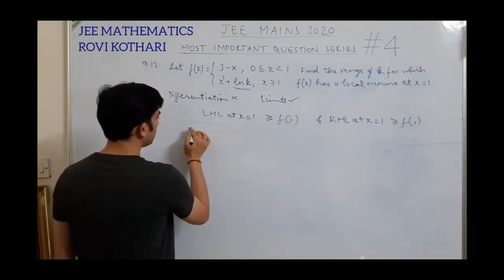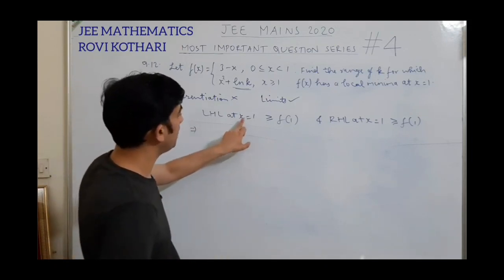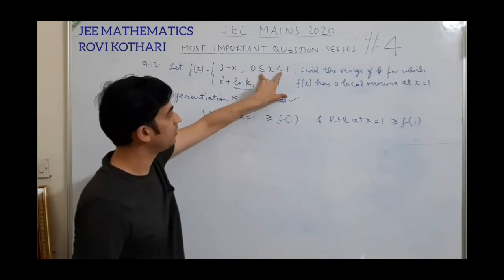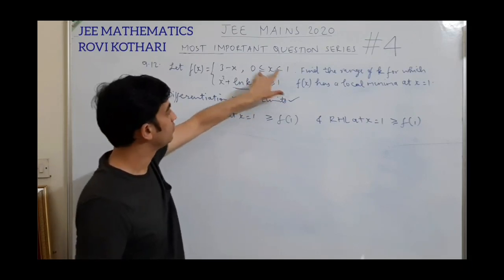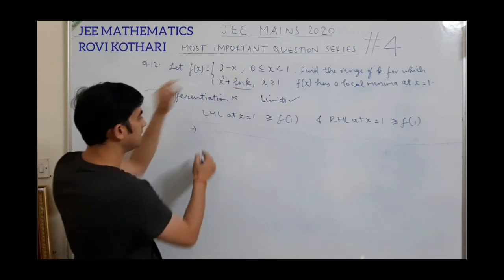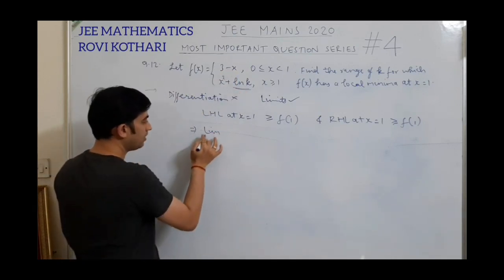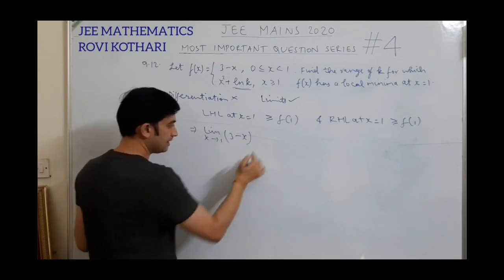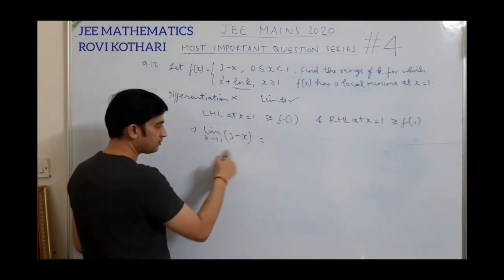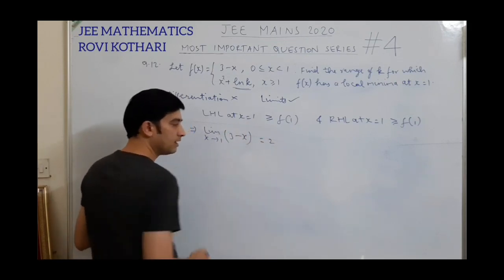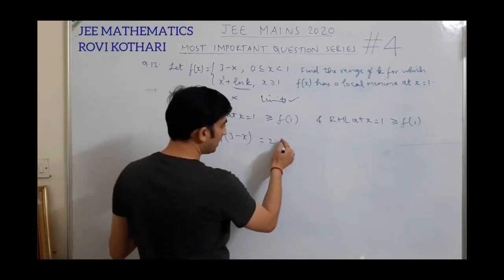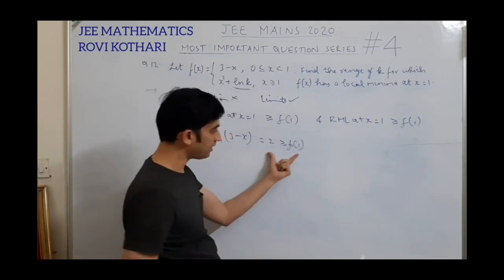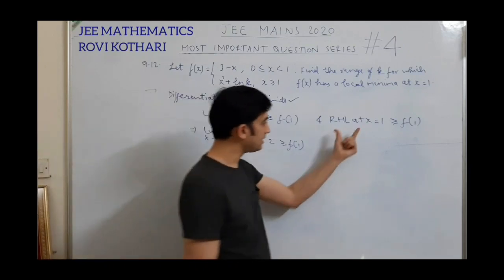Let us analyze what is the LHL of this function at x equal to 1. LHL means I need to put x less than 1. Less than 1 will go in this particular domain, so the function that comes to me is 3 minus x. That means I need to find the limit as x tends to 1 of 3 minus x. Since it's a polynomial, just put x equal to 1: we get 2. So I must get 2 greater than or equal to f(1).